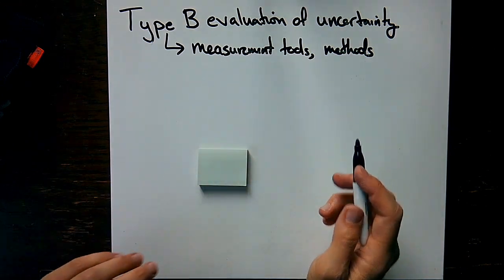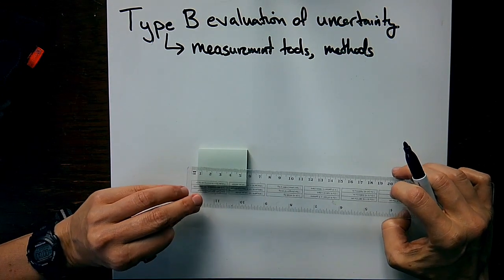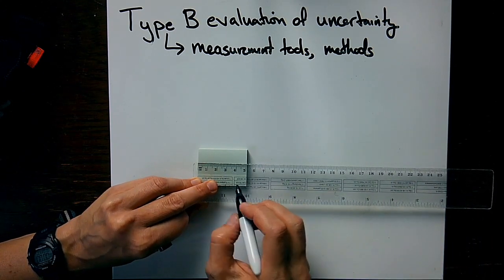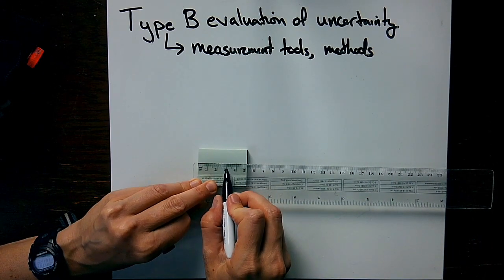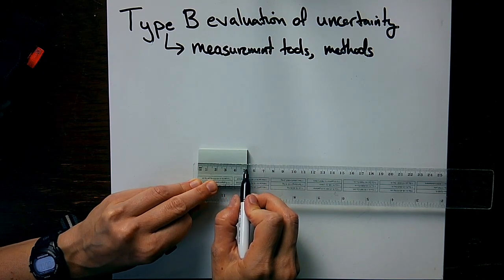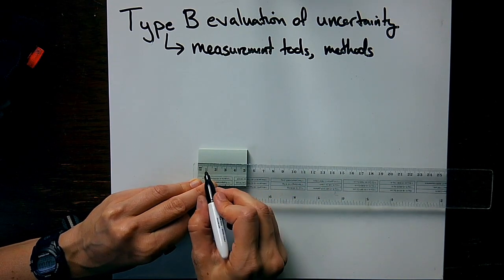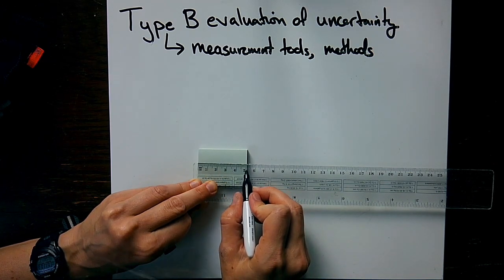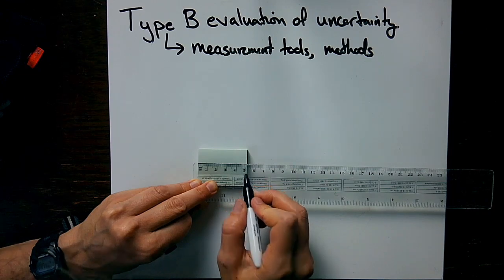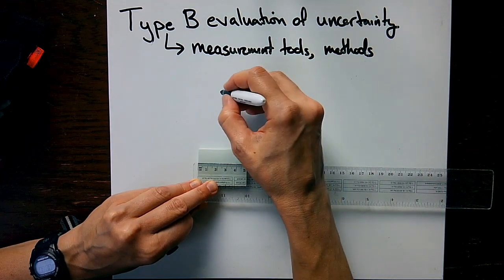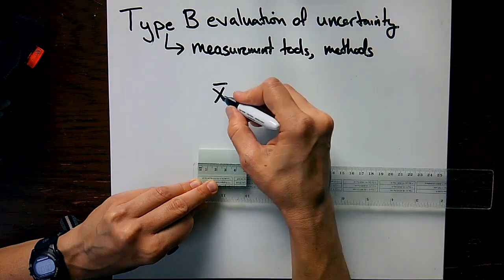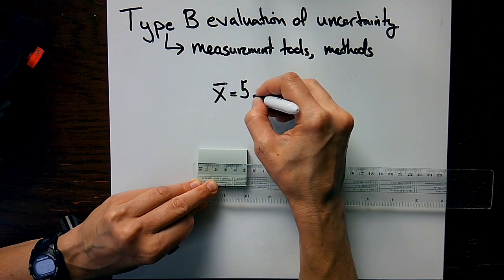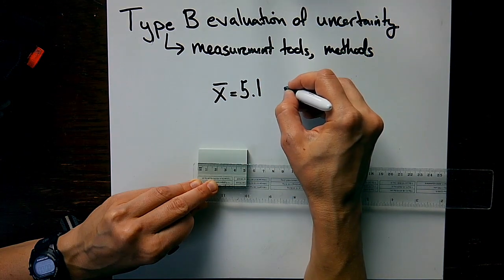For example, we have a little post-it note here. I've got a ruler. I'm going to measure in metric units. My smallest increment are millimeters right here. When I measure this, it looks like it's five centimeters and it's right maybe at that tick mark. So I would say my value here is 5.1 centimeters.